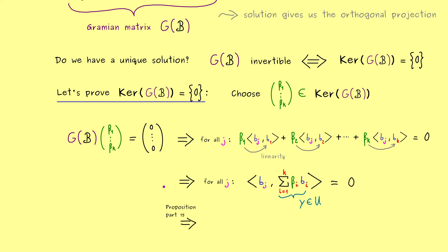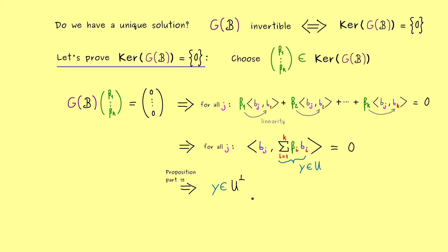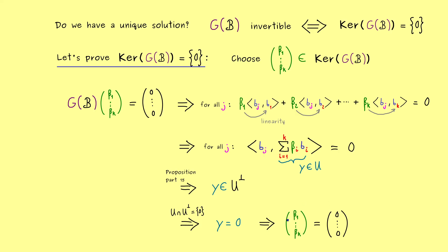Recalling the proposition from the last video, this tells us that y is already in the orthogonal complement — if it is orthogonal to the basis, it is orthogonal to the whole subspace. But now we have a strange fact: y is in U but also in the orthogonal complement of U. We already know that the intersection of a subspace with its orthogonal complement is very small — it only contains the zero vector. Therefore y has to be the zero vector. Since y was given as a linear combination of linearly independent vectors, the coefficients have to be zero as well, so our column vector is the zero vector. This means the kernel is trivial and therefore our Gramian matrix is invertible.